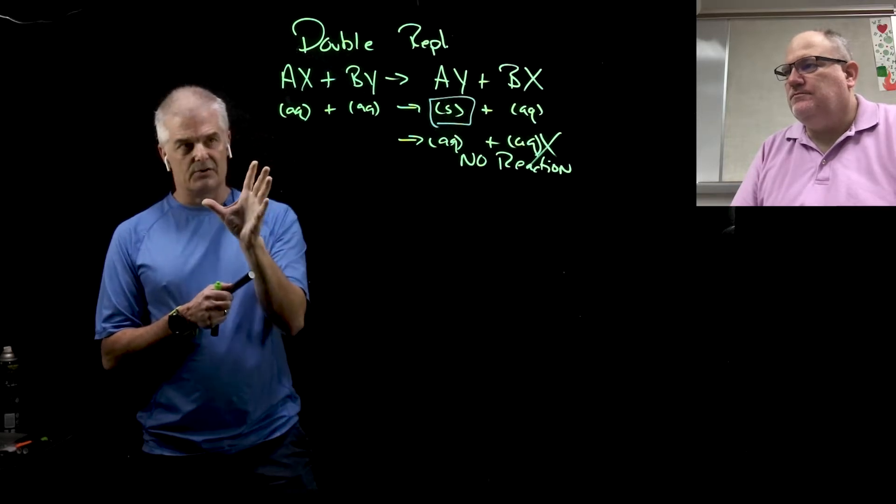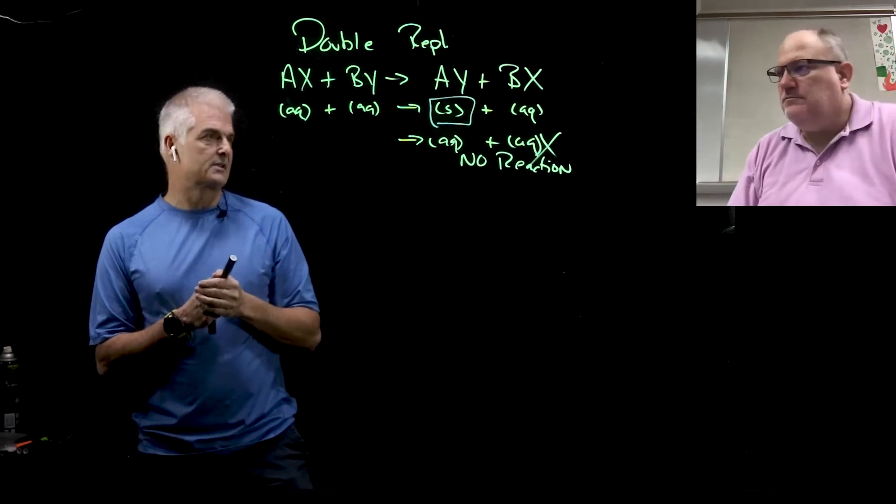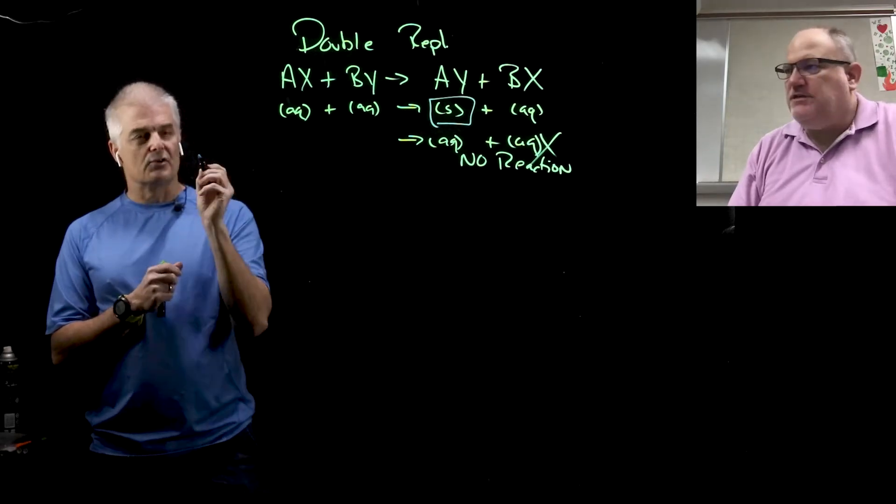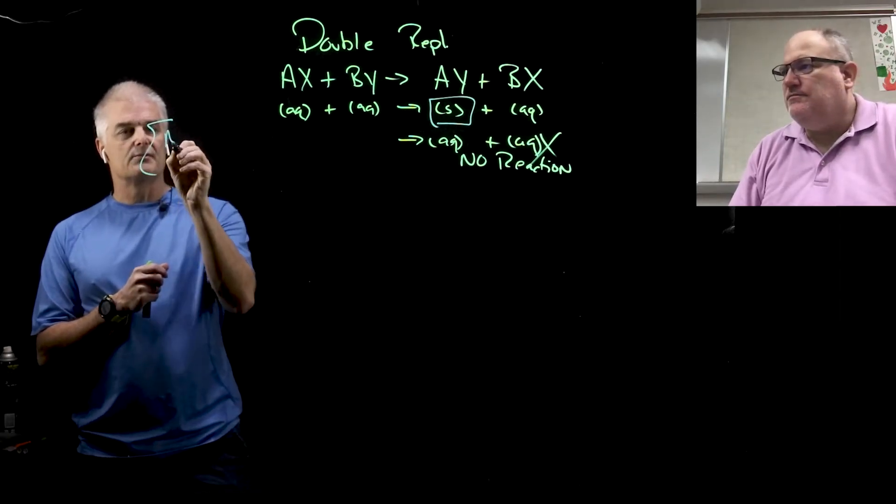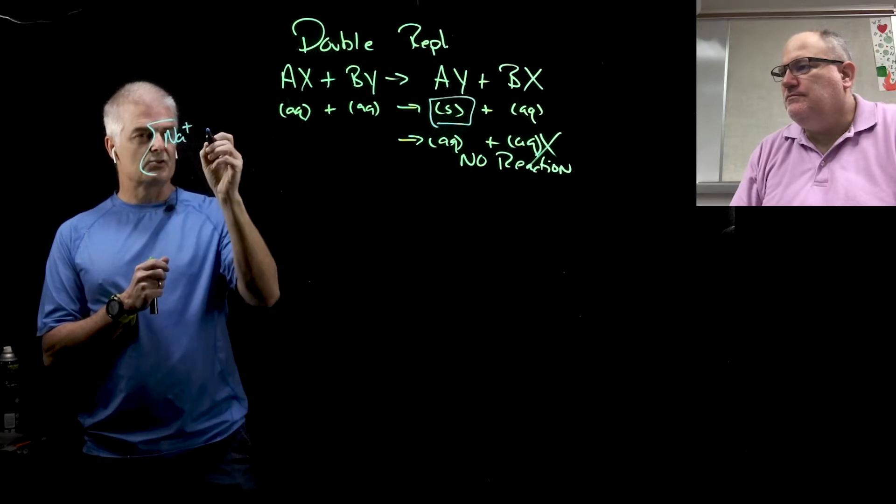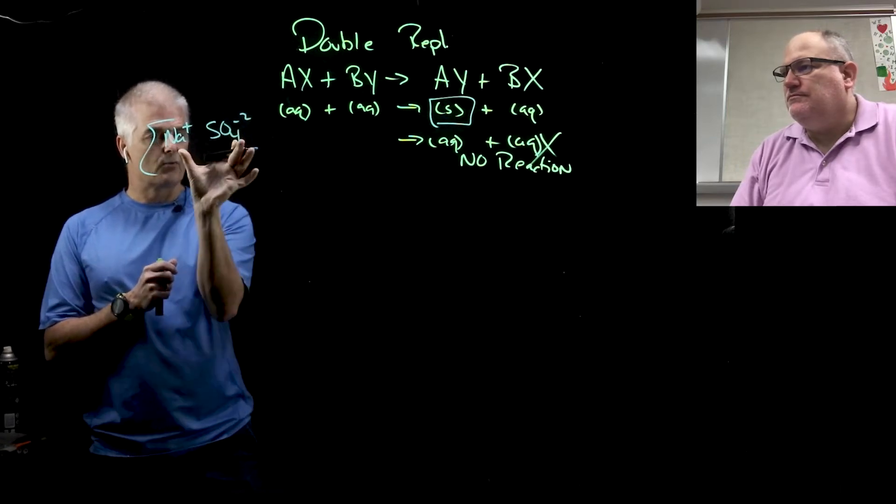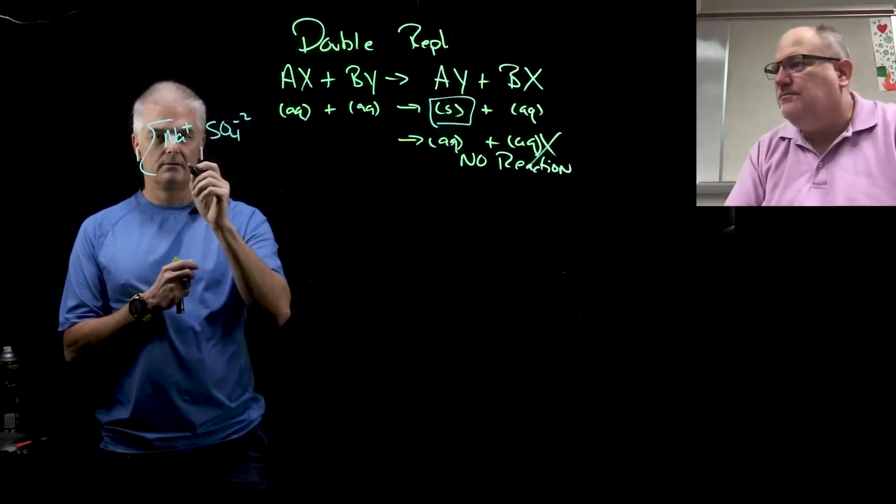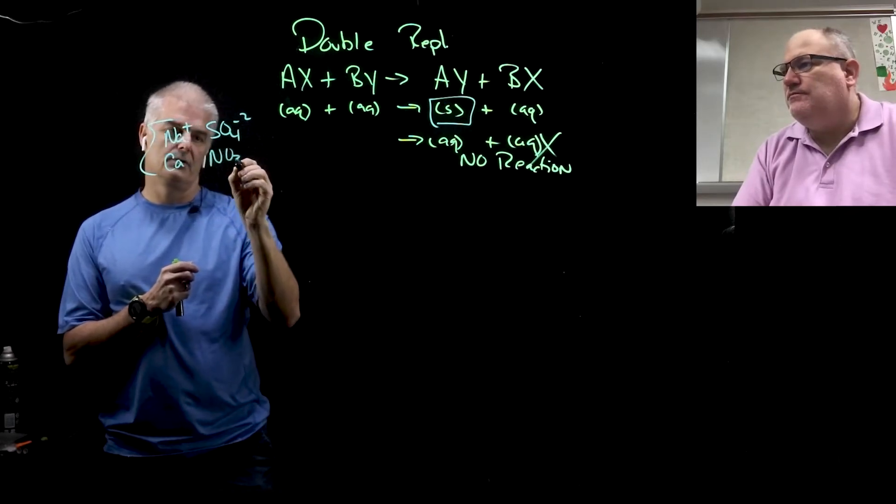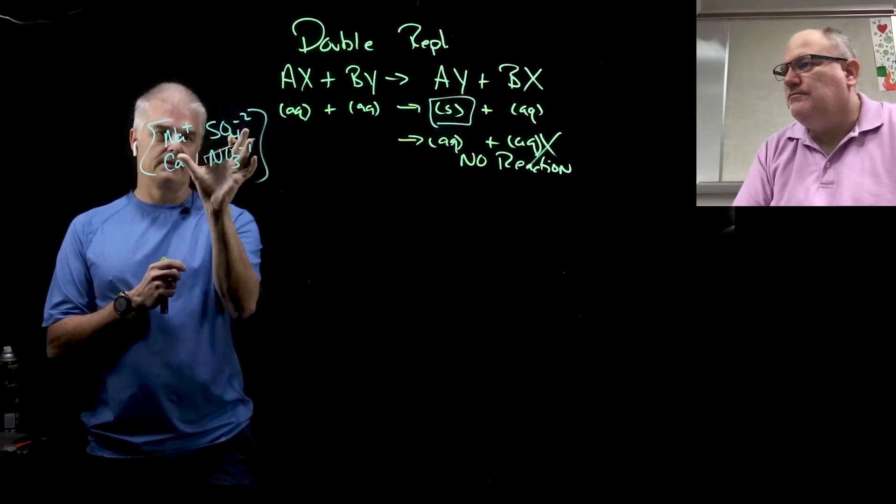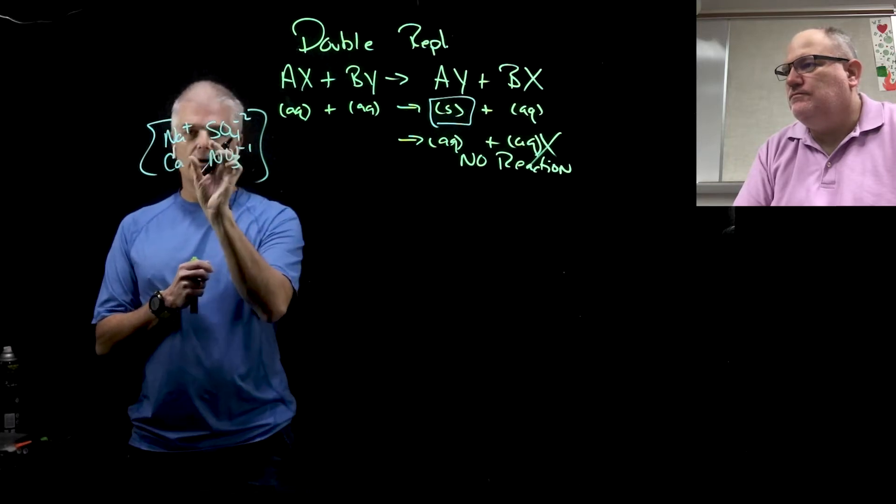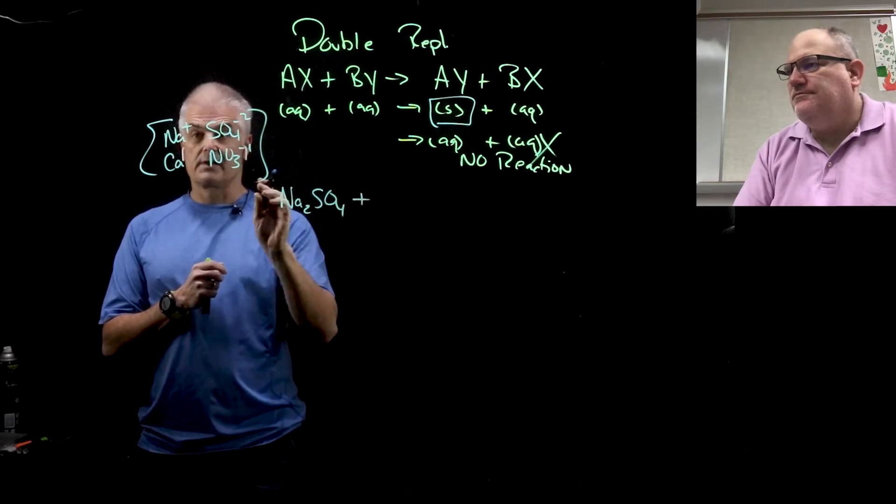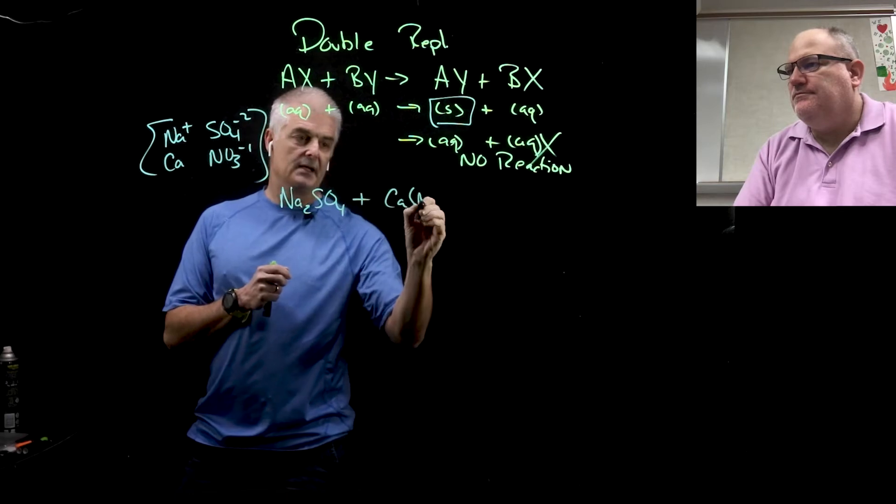The key is to make sure that you make at least one solid or the reaction doesn't take place, and both of these have to be aqueous. If one of these is a solid it won't work. I think the best way to do this is do a few examples. Let's try sodium sulfate plus calcium nitrate. I'm going to write out the charges in what I like to call a scratch pad. Sodium is Na+ SO4 2-, calcium is Ca2+ NO3-.